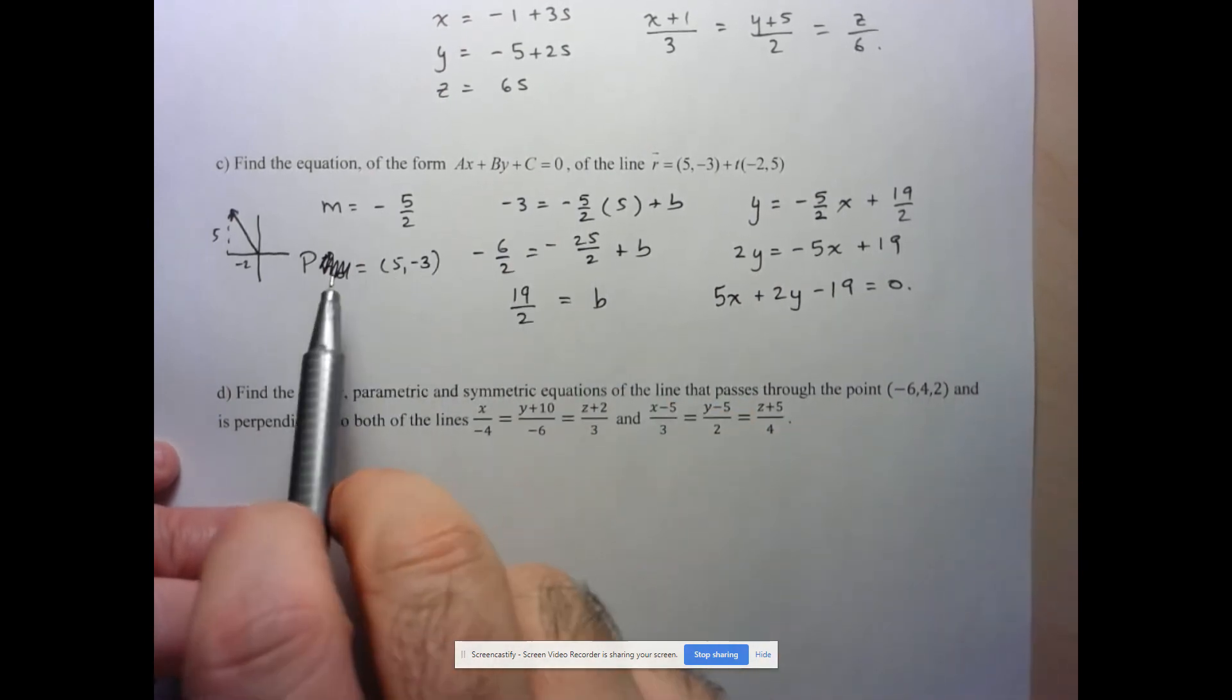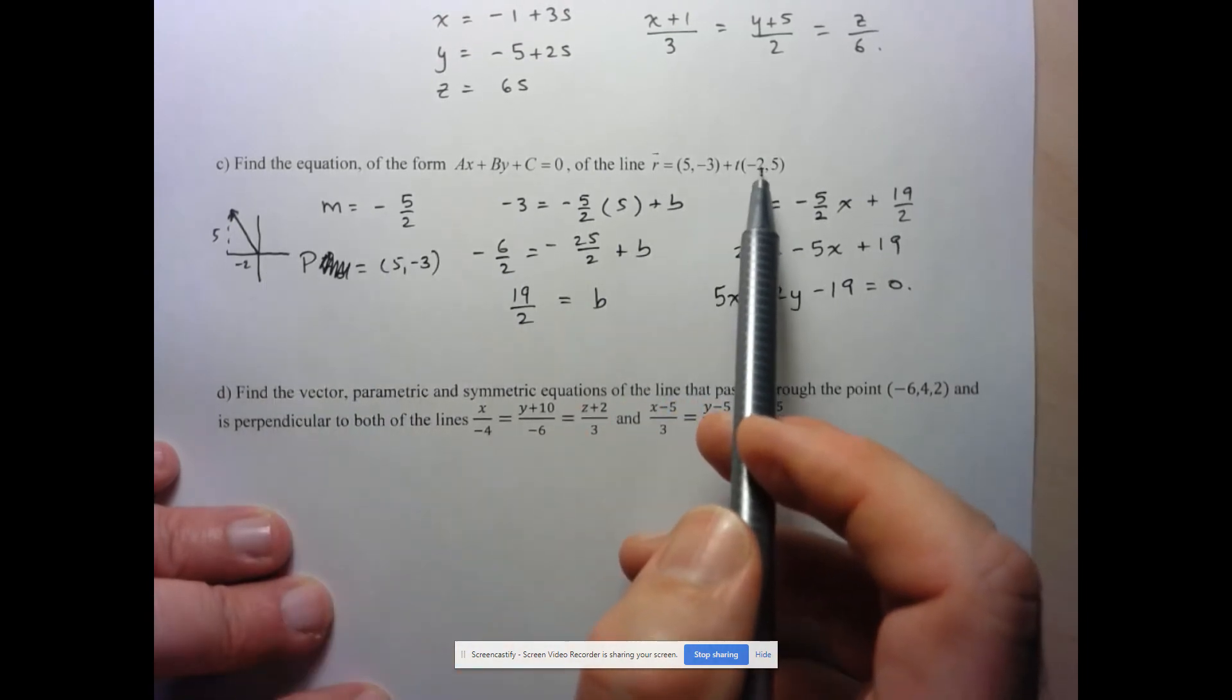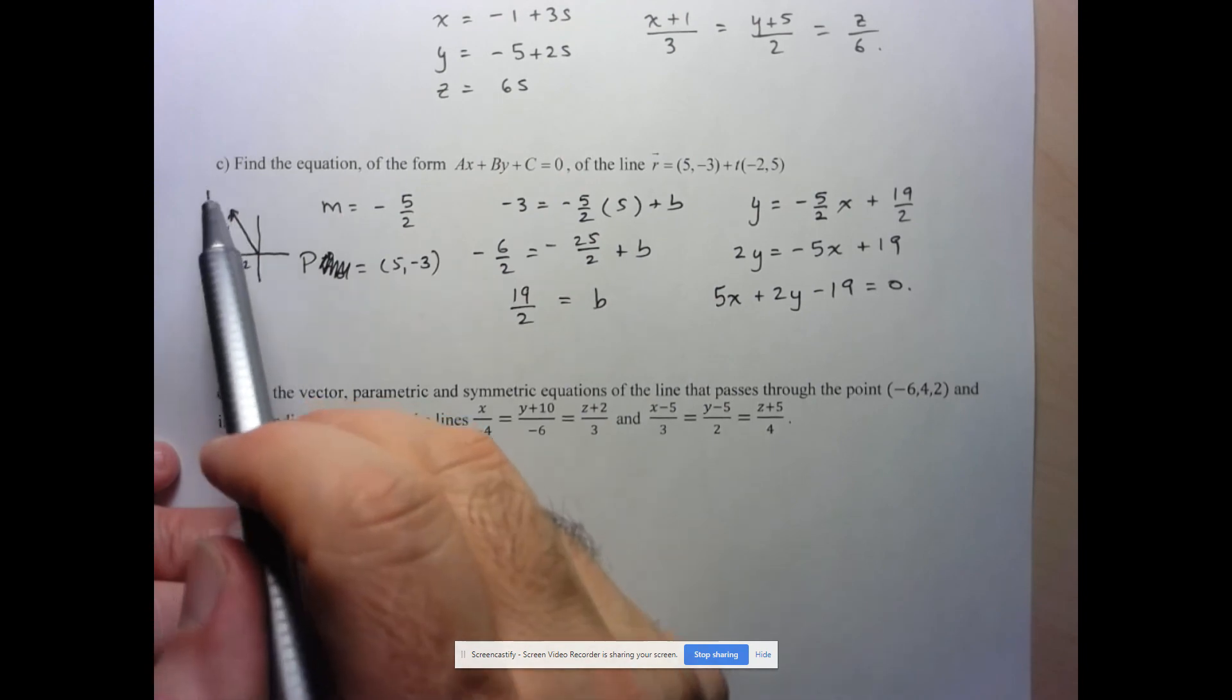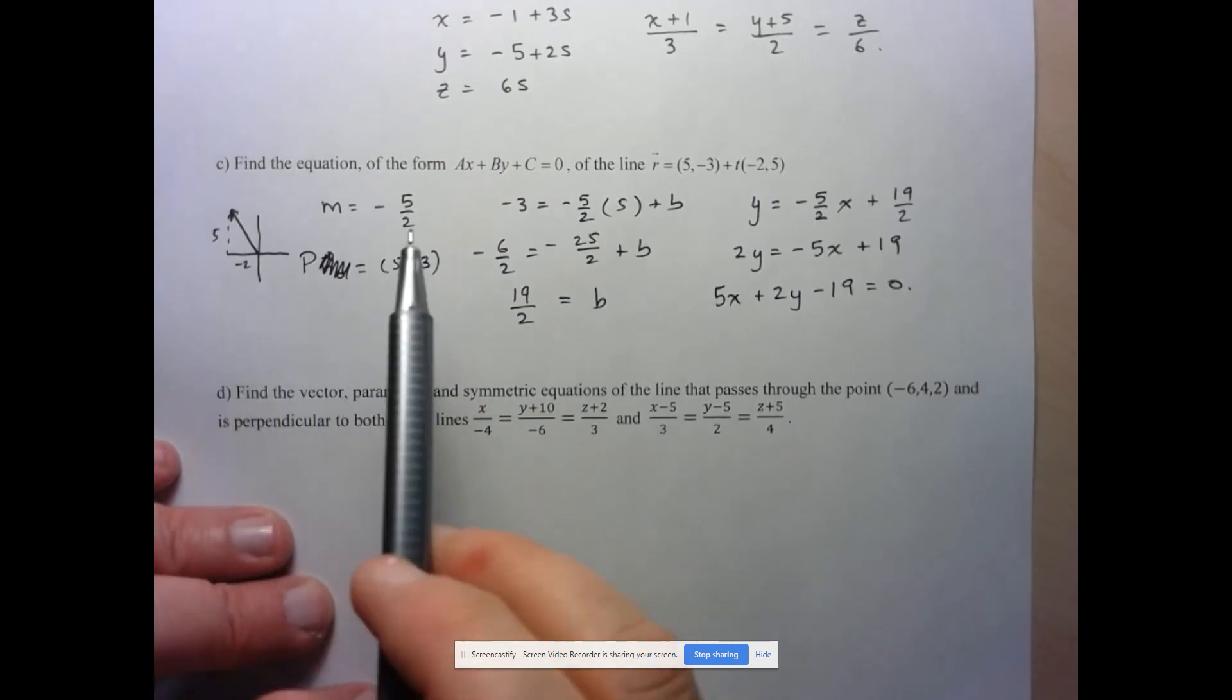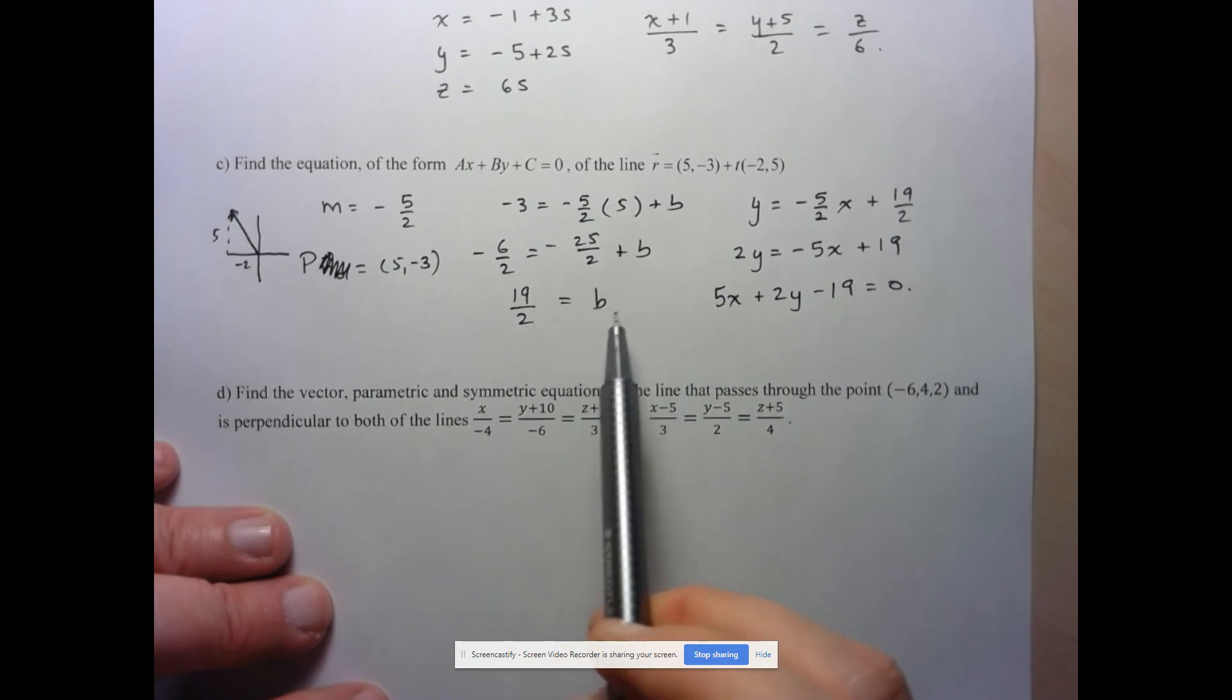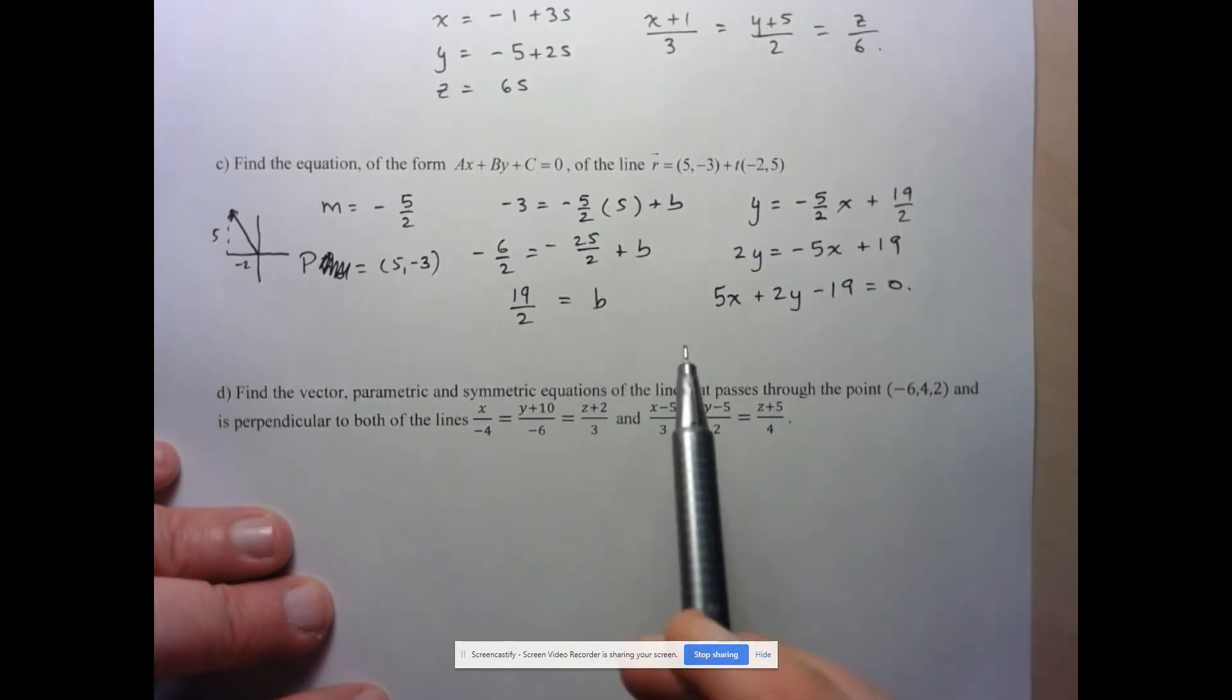So just to recap here, because I made a little mistake there. So just to recap here, I drew my direction vector negative 2, 5, and I calculated the slope that that vector creates. So negative 5 over 2. And then from there, I used the point on my line to find my slope intercept form and then change that into standard form.